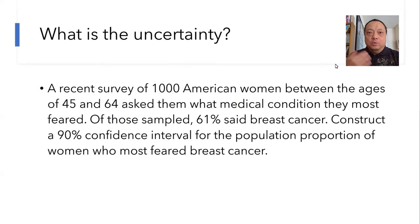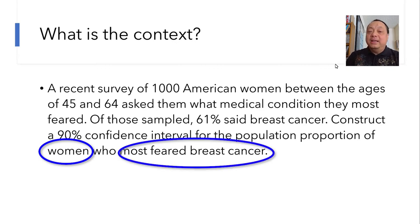Number one, what is the uncertainty here? The uncertainty is that we are only 90% confident, we are not 100% confident. That must be in the conclusion somewhere. Number two, what is the context here? First, the population is of women, and second, the proportion that we are calculating is about those who fear breast cancer the most. Both of those should be in the conclusion.